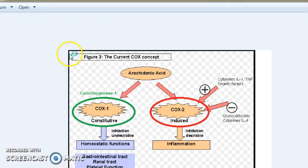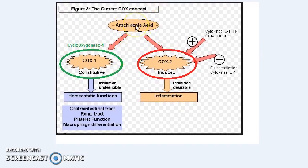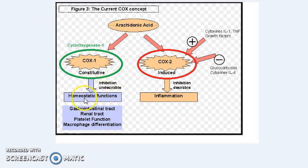Let us start with the basic understanding of COX. Basically, in our body there are phospholipids in the cell membrane. The phospholipids are converted to arachidonic acid. Arachidonic acid, in a normal physiological pathway with the help of COX-1 enzyme, gets converted into some prostaglandins which have physiological functions — these maintain homeostasis. COX-1 is a constitutive enzyme; it is present in your body at all times.